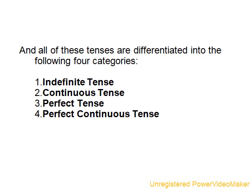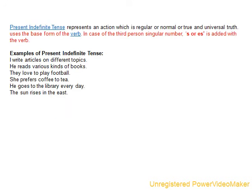And then for past tense, you can say there are four kinds of past tense: past indefinite tense, past continuous tense, past perfect tense, and past perfect continuous tense. And then we will move on to our next slide.